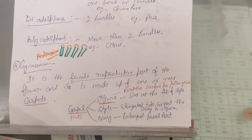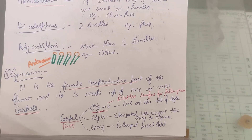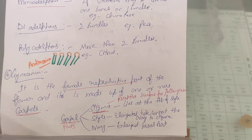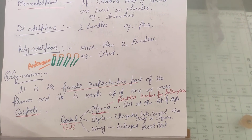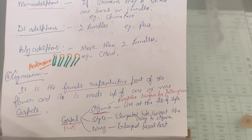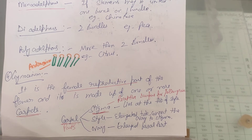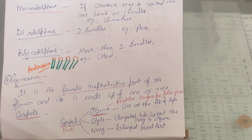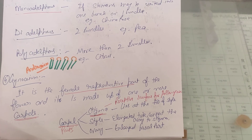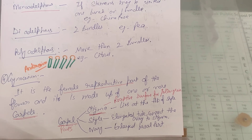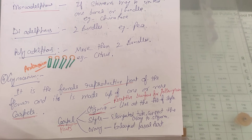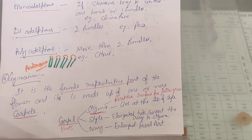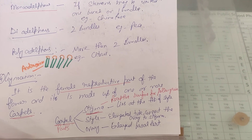Next comes the gynosium. It is the female reproductive part of the flower and is made up of one or more carpels. Androsium consists of stamens and gynosium consists of carpels. Carpels have three parts: stigma, style, and ovary.